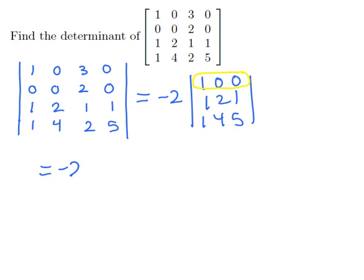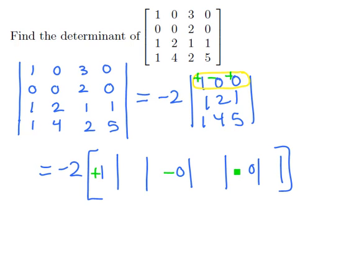...we'll find, remembering that there's a negative 2 in front of everything we are doing right now, that we'd have 1 times a 2 by 2 block of numbers, then 0 times a 2 by 2 block, and then 0 times a 2 by 2 block. Using the checkerboard pattern of plus, minus, plus, we'd be adding the first term, subtracting the second, and adding the third.